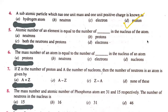The atomic number of an element is equal to the number of dash in the nucleus of the atom. Options: neutron, proton, both neutron and proton. Is atomic number equal to electrons? No. Neutrons and protons together give the atomic mass.